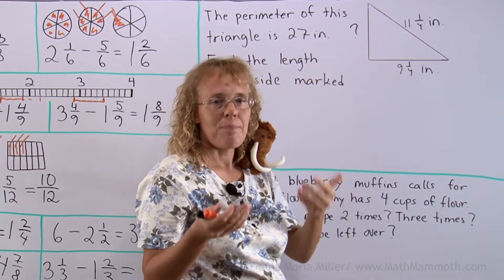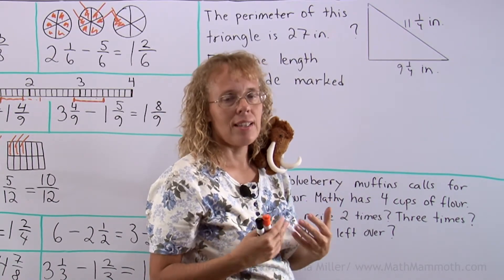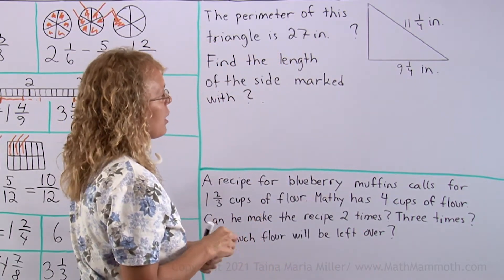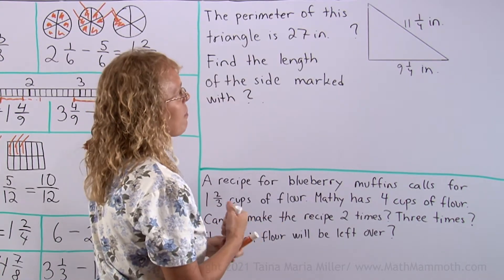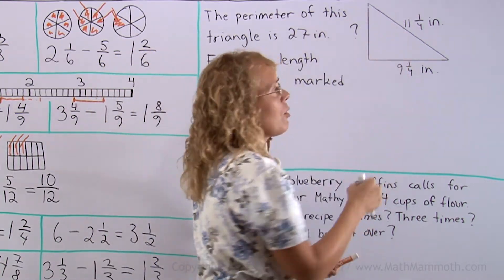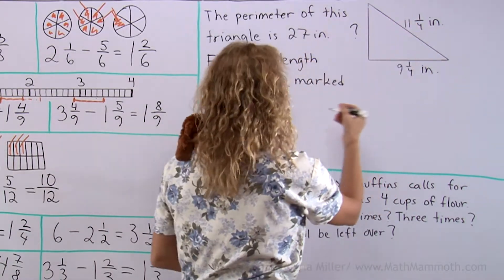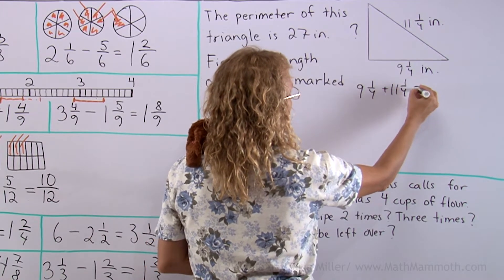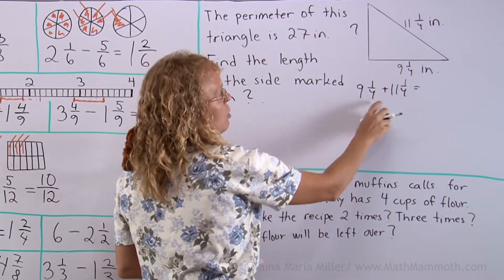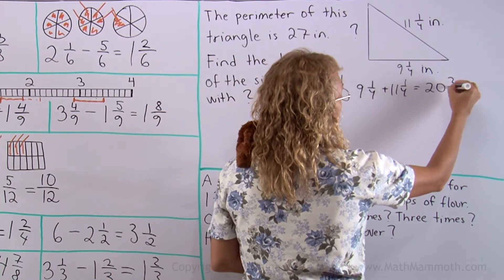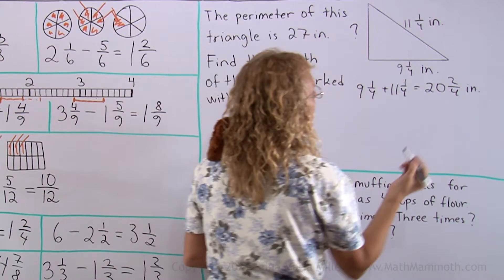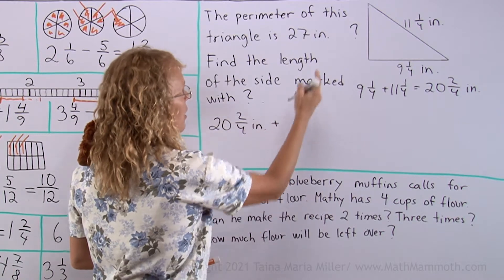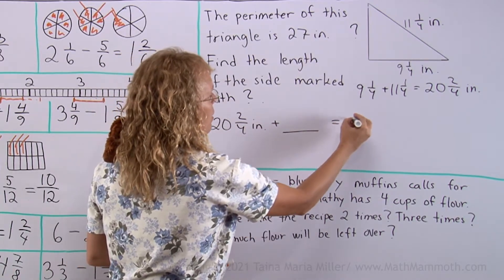We can find it either by subtracting or we can add and then think of the missing number, missing addend. There's two ways to think about it. So let me solve it the second way. I'm gonna first of all add these two together, so I know the total distance together of these two sides. And then let me write here 20 and 2/4 inches. And if we added to that this unknown side, then we would get 27 inches.